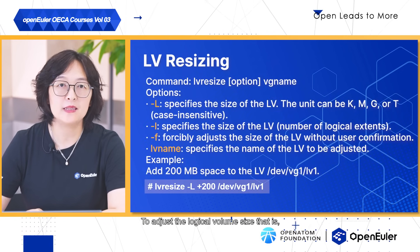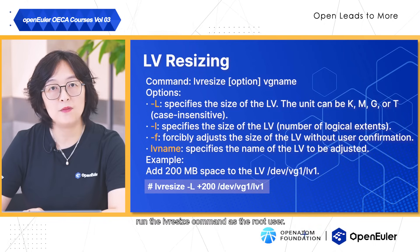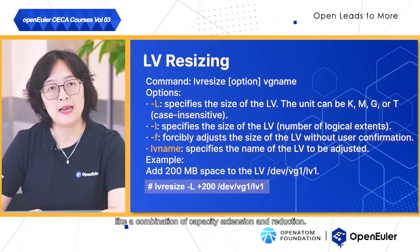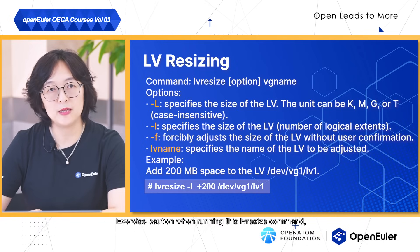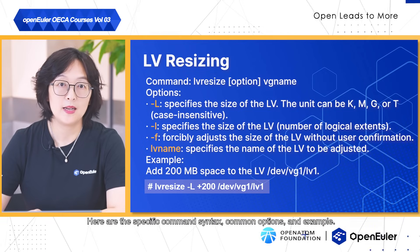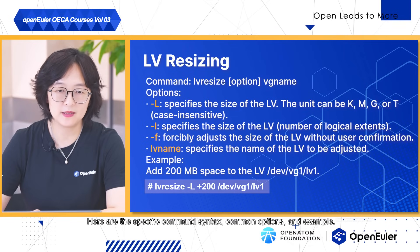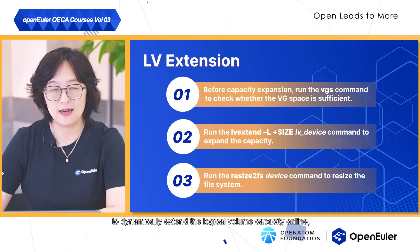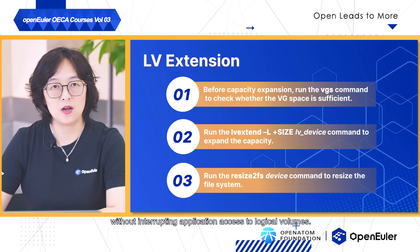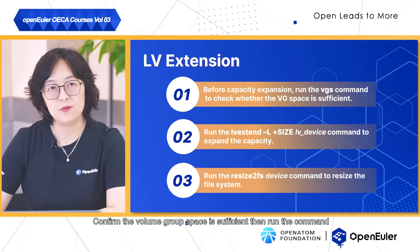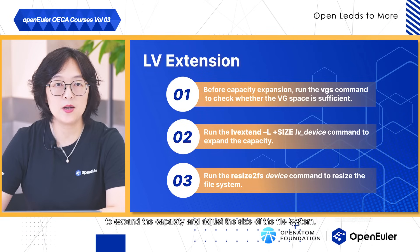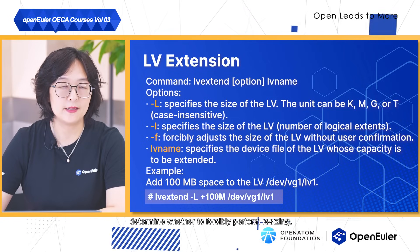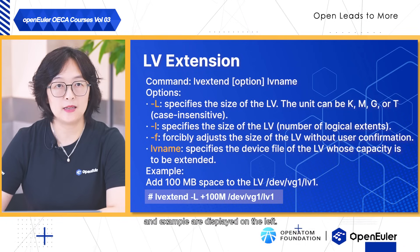To adjust the logical volume size, that is to increase or reduce the volume capacity, run the lvresize command as the root user. This command acts like a combination of capacity extension and reduction. Exercise caution when running lvresize, because data may be lost during resizing. In addition to lvresize, you can also run the lvextend command to dynamically extend the logical volume capacity online, without interrupting application access to logical volumes. Confirm the volume group space is sufficient, then run the command to expand the capacity and adjust the size of the file system. The lvextend command can also be used to determine whether to forcibly perform resizing.